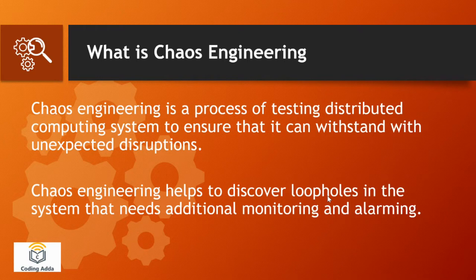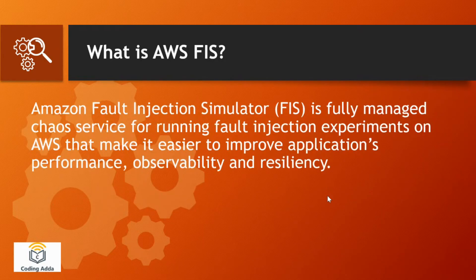We check whether the application will withstand that particular condition, or what is the exact behavior of that application. Chaos engineering helps us discover any loopholes in our applications, so that the system may need some additional monitoring and alarming to understand why it is not behaving in the expected state.